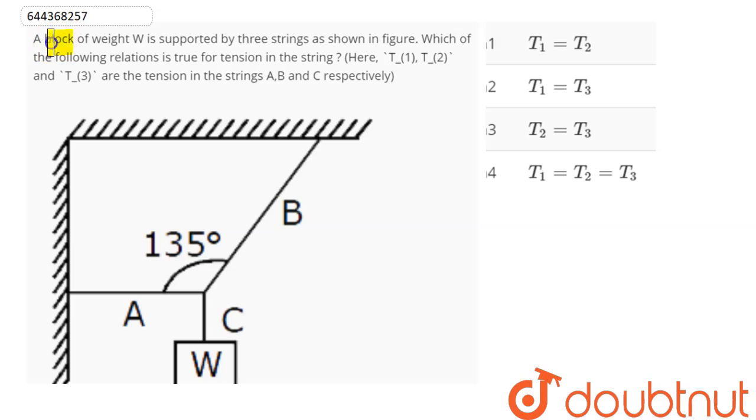Question is, a block of weight W is supported by three strings as shown in figure, which of the following relation is true for the strings T1, T2, T3 are tension in the strings A, B and C. Now, here we can say tension in the string A is T1, tension in the string B is our T2 and we can say tension in the string here C is T3.